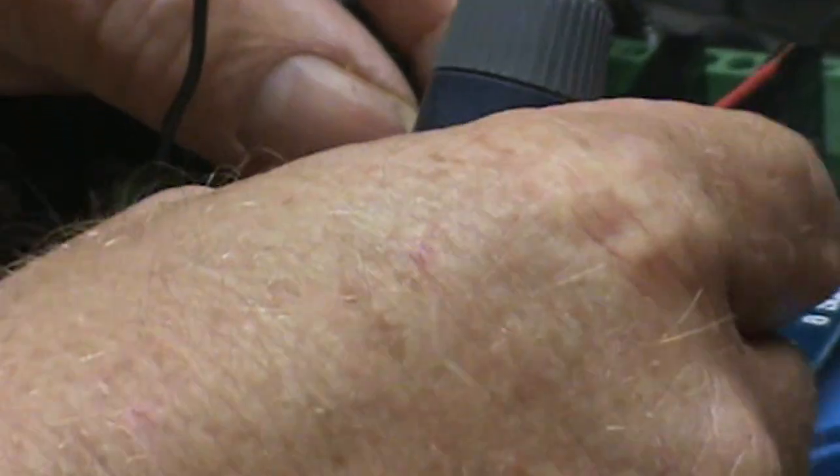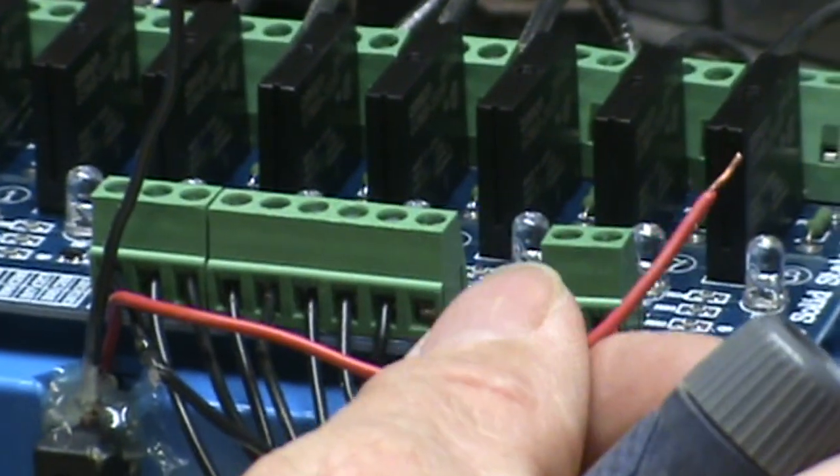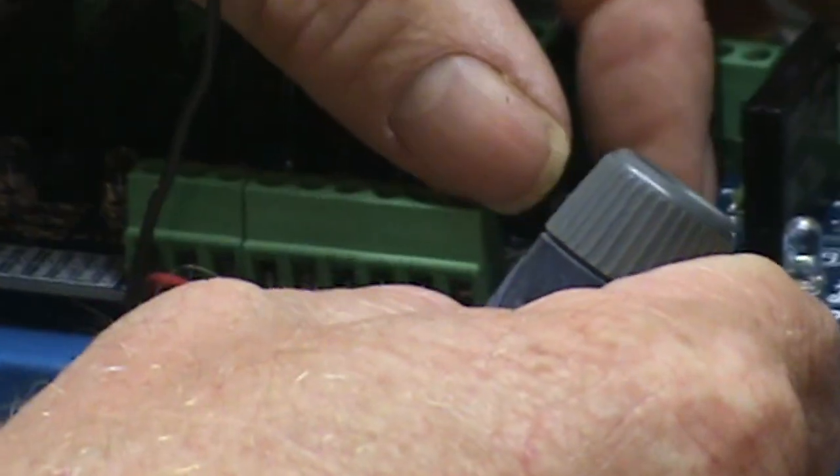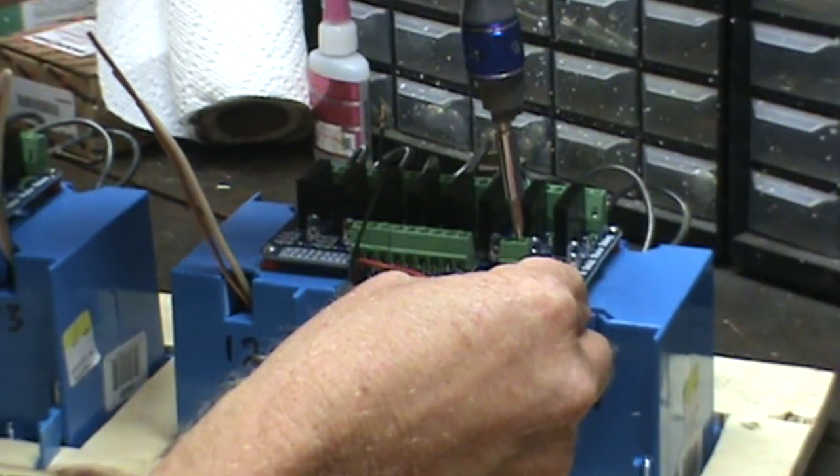So we're going to put our red wires in the second one, and we're going to put a wire long enough to reach the other relay board in the same hole. Tighten it down.